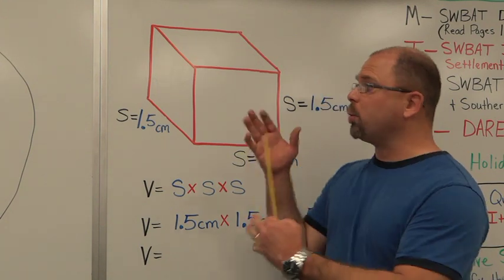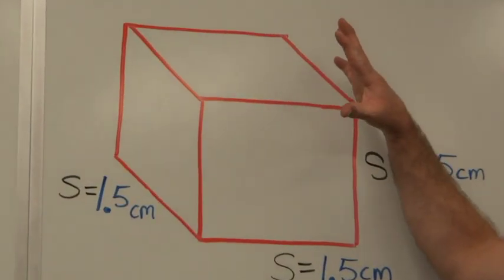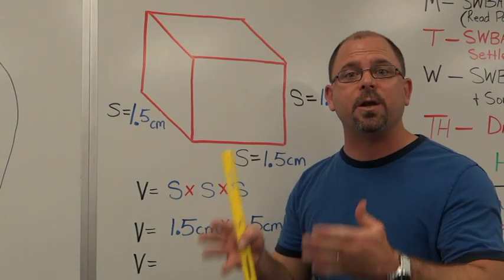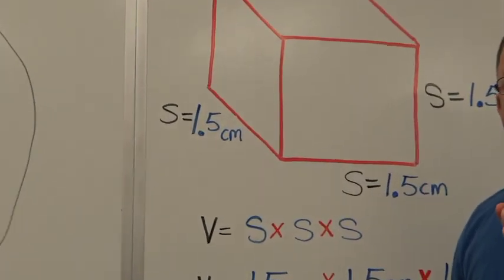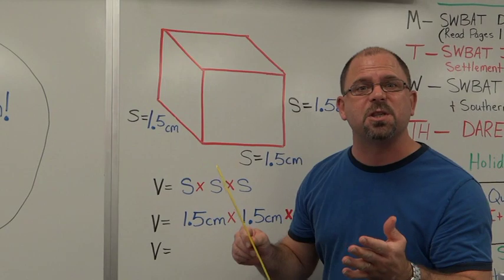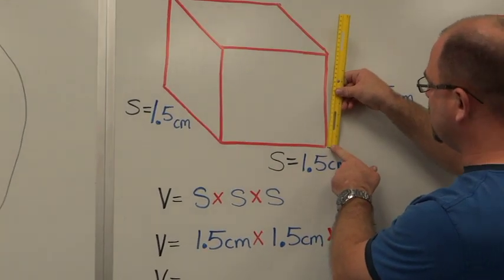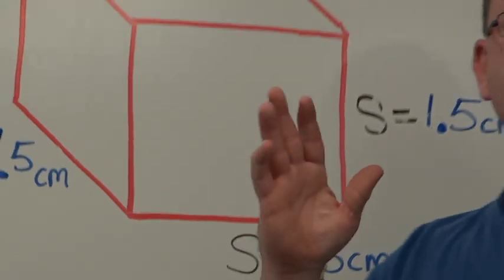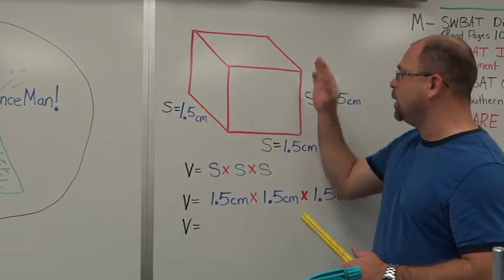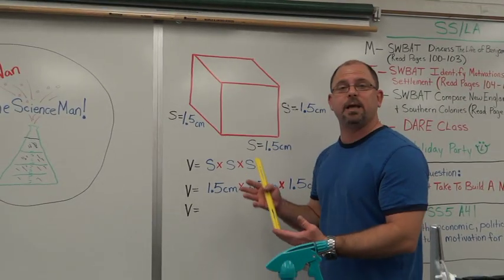Another thing students will need to know is a refresher on how to measure and calculate the volume of a cube. I've drawn a big blown-up version of our density cubes on the board. The beautiful thing about a cube is all the sides are equal, so you'll only have to measure one side. We would take our density cube, take our ruler, and use the centimeter side — always start at 1. Just measure one of the sides.